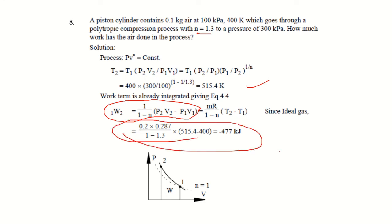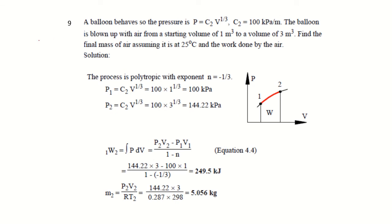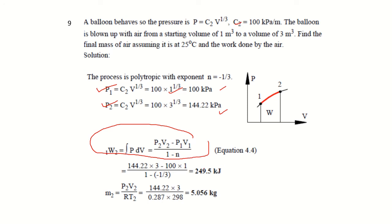Example 7: A balloon has pressure P = C2·V^(1/3) where C2=100 kPa/m^(1/3). It is blown up from 1 m³ to 3 m³. We find P2 from the given relation, then determine the final mass of air at 25°C using the ideal gas law (PV = mRT). Work done during the polytropic process is found using the appropriate work equation, substituting P2, V2, and the known values.